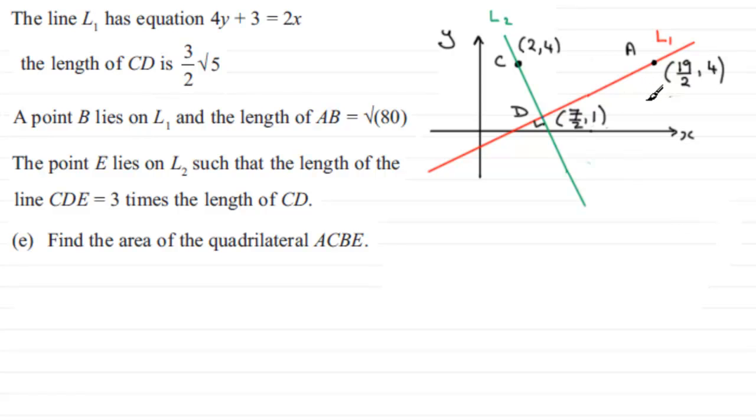We've got point A that we found in the very first part. It had coordinates P, 4. We showed that P was 19 over 2, and so the coordinates of A are 19 over 2, 4.